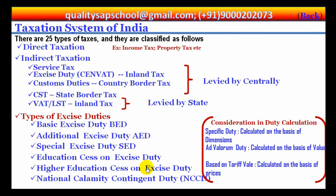That law must be passed either by the Parliament or the state legislature. Now, there are 25 types of taxes levied by state and central governments — even more than that — but they are classified according to direct taxation or indirect taxation. We know very well what direct taxation is: income tax, property tax — such kinds of taxes imposed on individuals and Indian citizens is the direct taxation system.